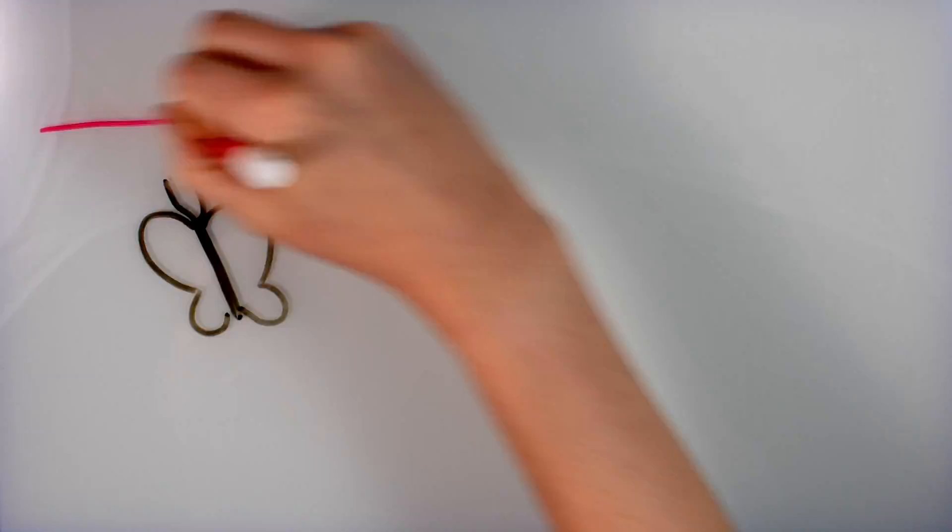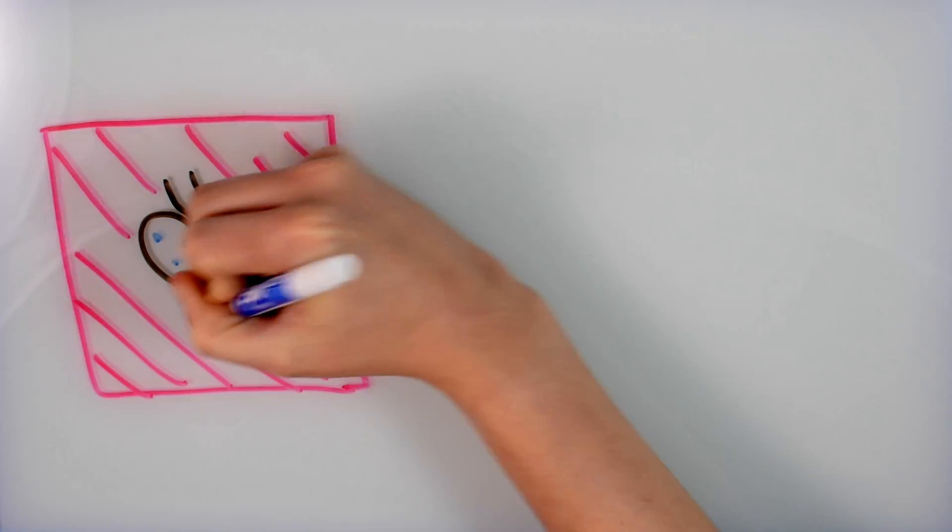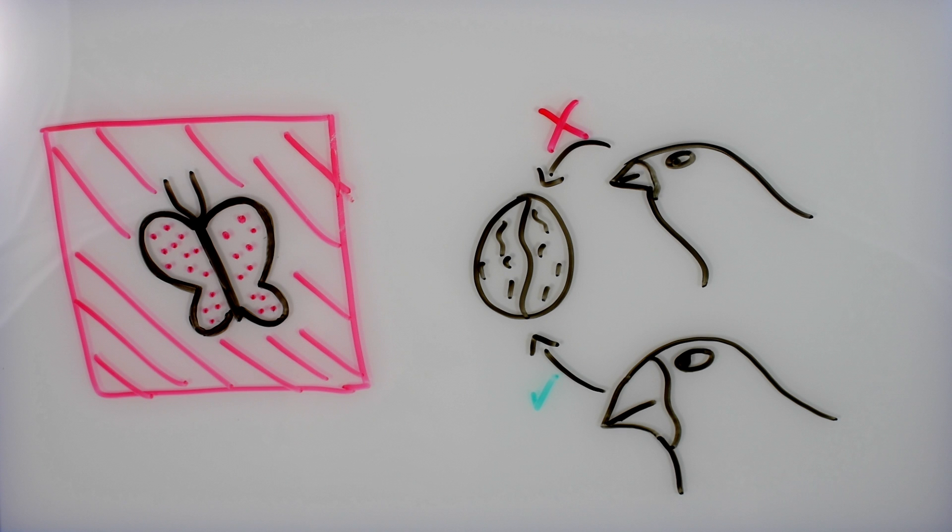There are millions of examples of plants and animals adapting to their environment. Need to blend in? Change your coloring. Need to crack a different kind of nut? Change your beak. But while we have lots of examples of adaptation, we rarely have the ability to look at what genetic changes caused the physical ones.